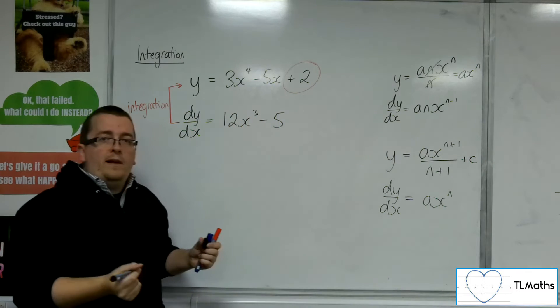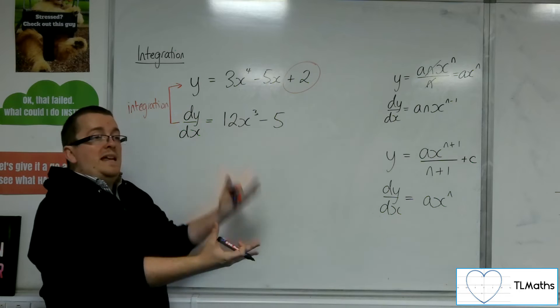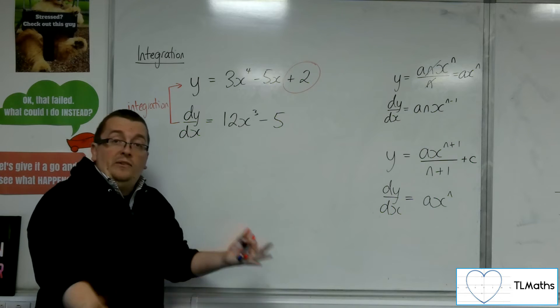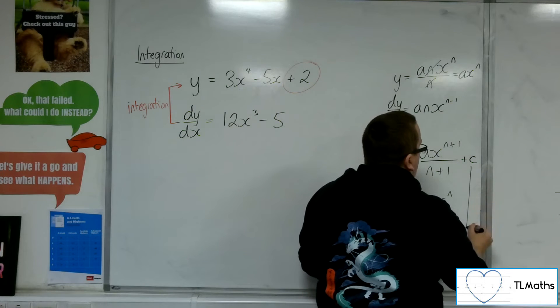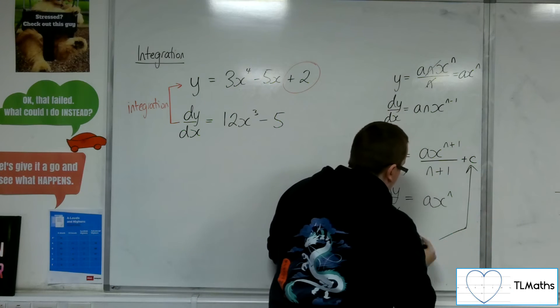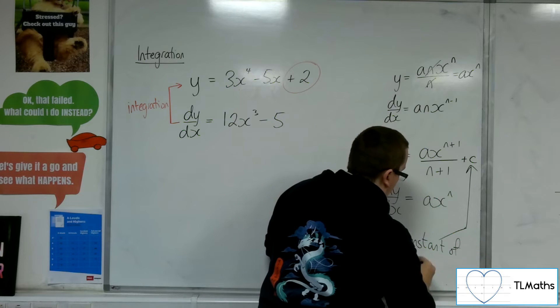But I must have something else added on. And I'm going to use a plus c to represent this number that may be there. It might be 0. It might be minus a billion. You don't know. So, this is what we refer to as the constant of integration.